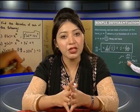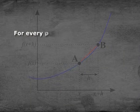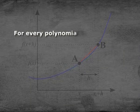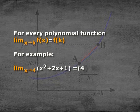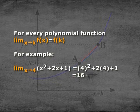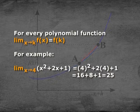This fact is true for every polynomial function. That is, for every polynomial function, limit x→k of f(x) is equal to f(k). For example, limit x→4 of (x² + 2x + 1) is equal to 4² + 2×4 + 1, that is equal to 16 + 8 + 1, which equals 25.